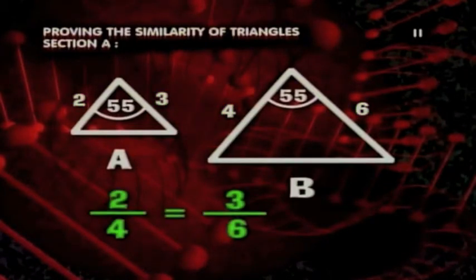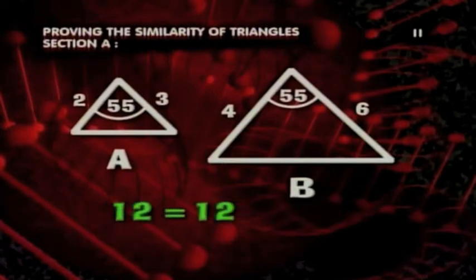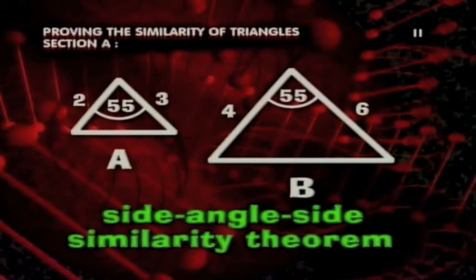We cross-multiply for 12 equals 12, so the sides are in proportion. According to the side-angle-side similarity theorem, our triangles are similar.